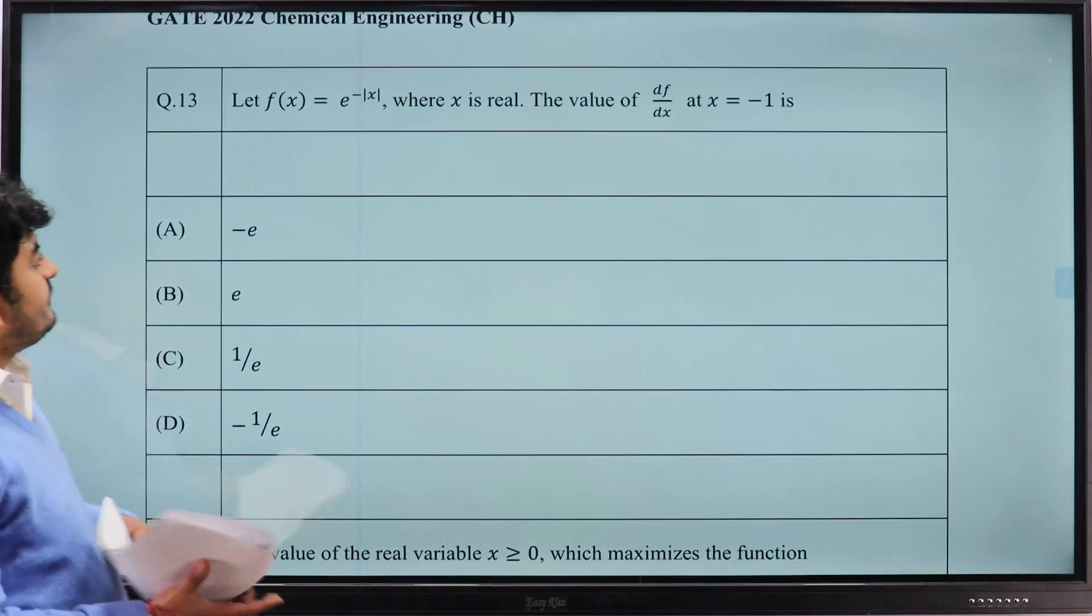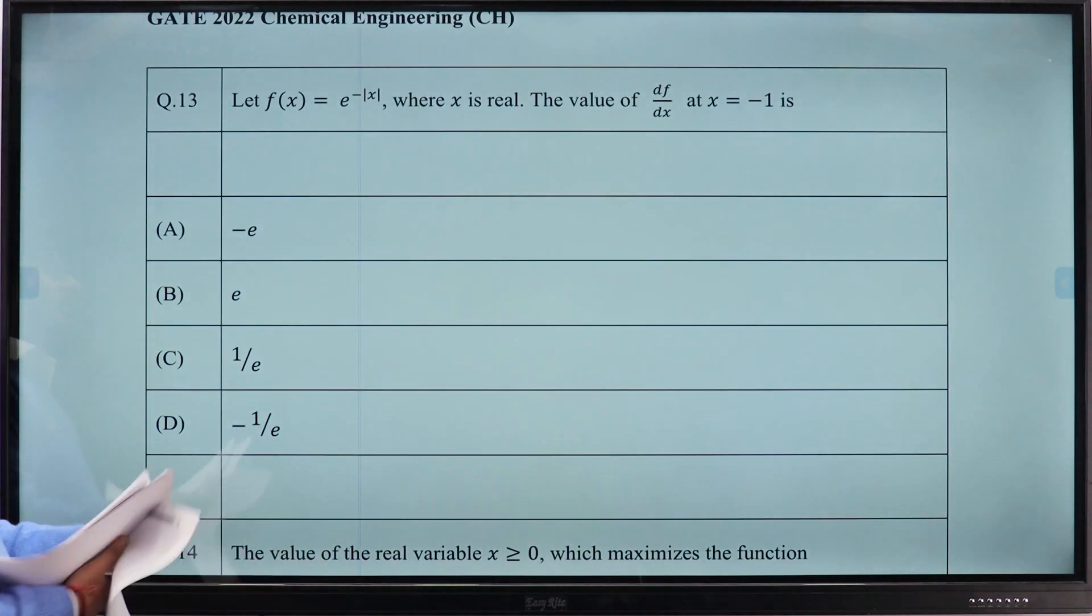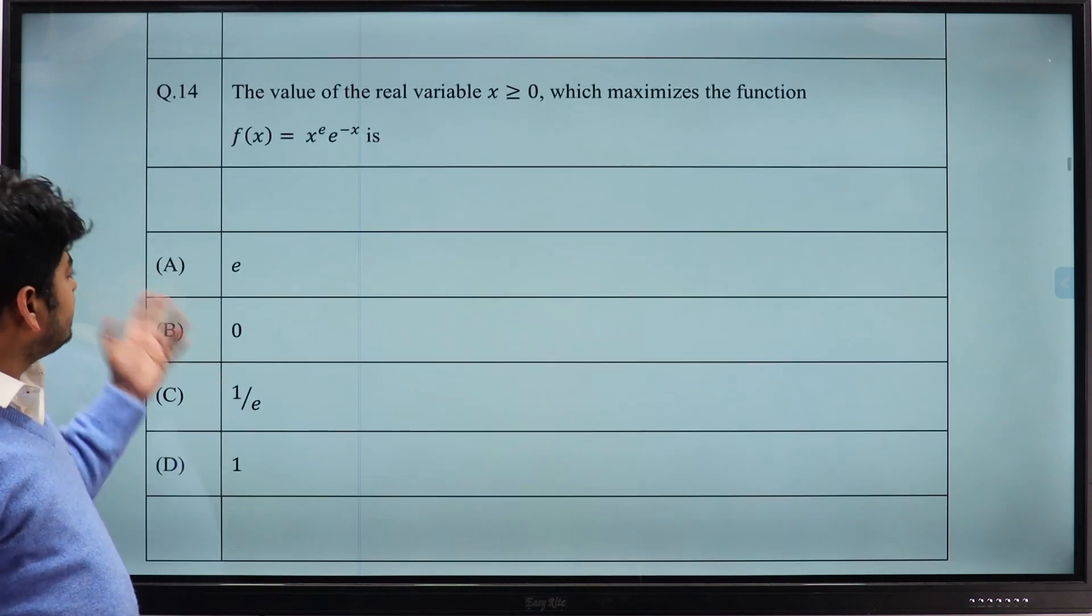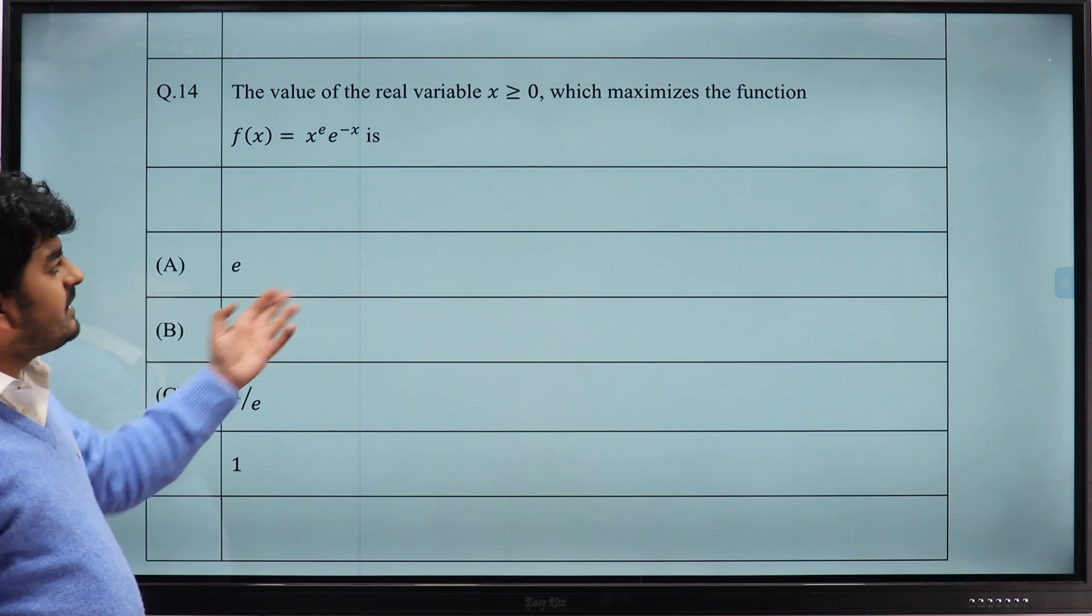Question number 13, from this question what is the value of df/dx at x equal to minus 1? Option C, 1 by e is the correct answer. For this question, the correct answer is option A, that is e.